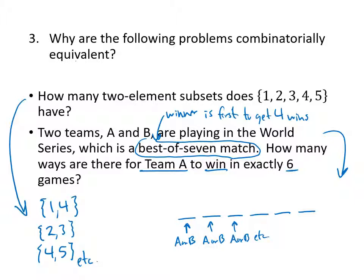But if team A wins the series in exactly six games, that means that after that sixth game, the series is over and A won, which means A had to win that last game. You don't play the last game and B wins that game and then team A celebrates. That's not how that works. If the series is over, the team that won the series must have won that last game. So there's no doubt about who wins that last game.